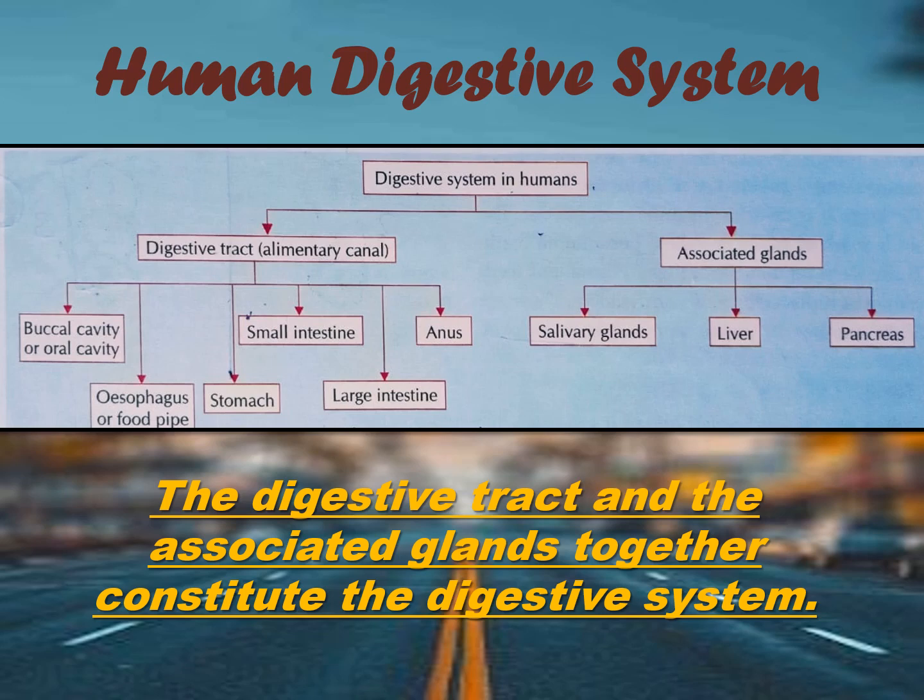The associated glands include salivary glands, liver, and pancreas. Together these constitute the digestive system.